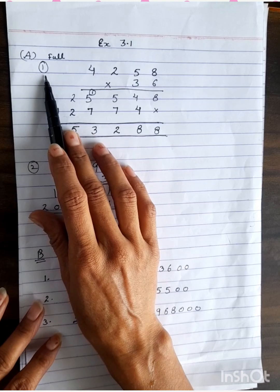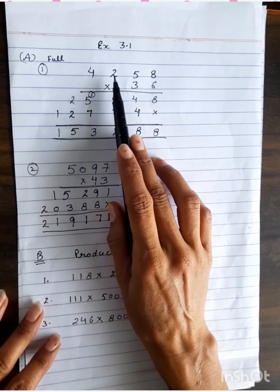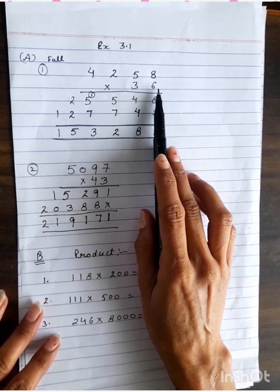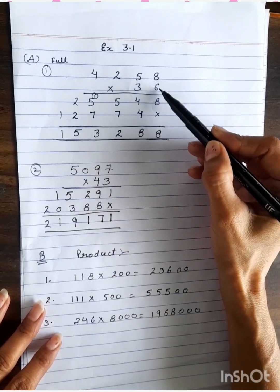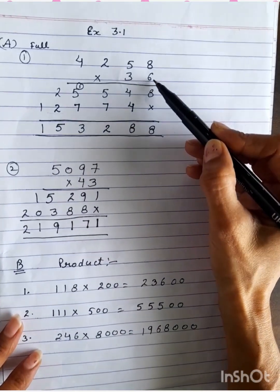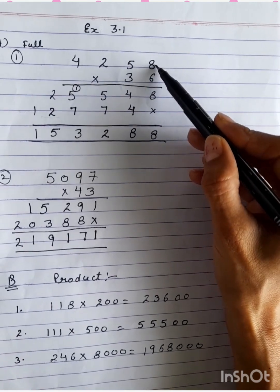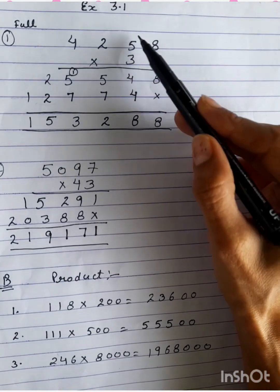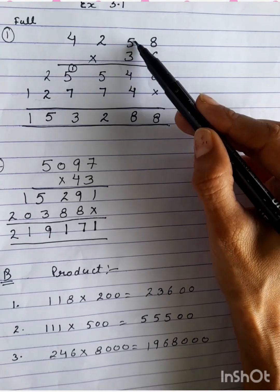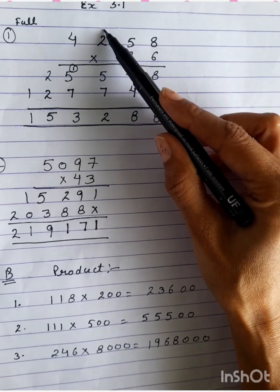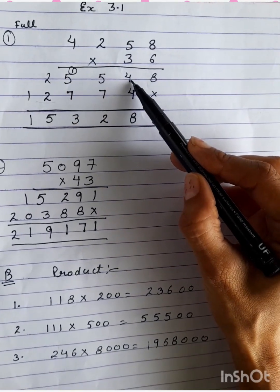Question number A1: 4258 multiply by 36. This is a double digit multiplication. So we will start with the ones place digit, that is 6. 6 times 8 is 48. 4 carry for the next one and 8 I have written here. 6 times 5 is 30. 3 forward for the next one and 4 I have written here.